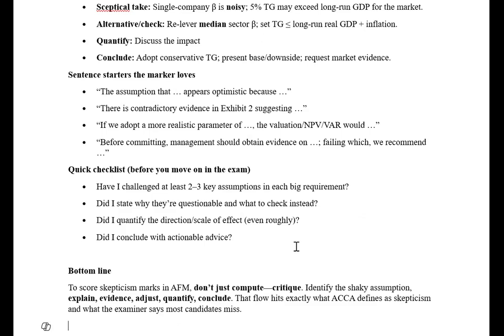Professional skill marks are key for success in AFM — there are 20 marks in total. Five marks each in question numbers two and three, and ten marks in question number one. In every question, challenge all the assumptions to get two to three marks. Discuss the commercial implications for professional judgment marks, discuss the financial results for evaluation and analysis marks, and produce a proper report format in question one for communication marks — that's how you score full marks.